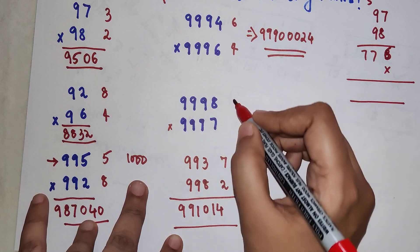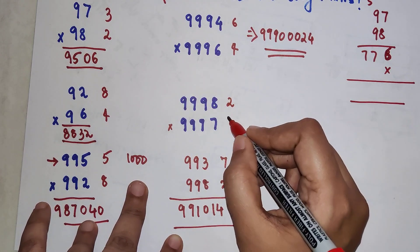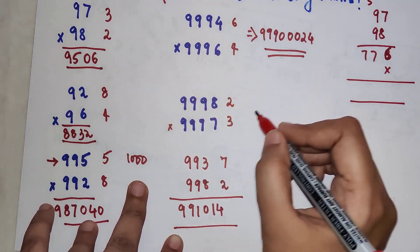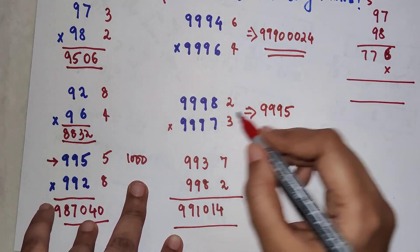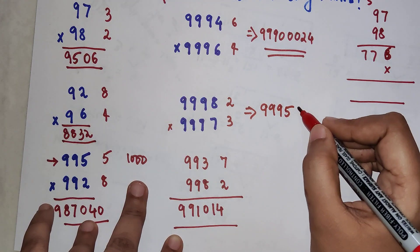So here, let's do this very quickly. The difference is 2, the difference is 3. You subtract, you get answer as 9995. You multiply, you get 6, so you'll add 3 zeros and a 6. That is the answer for this particular multiplication.